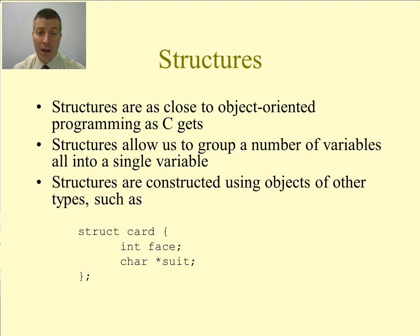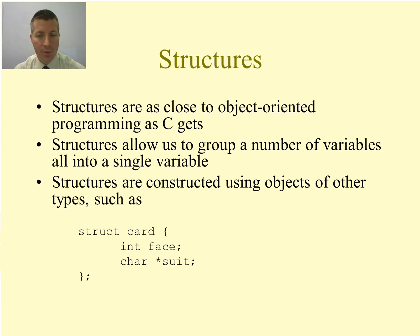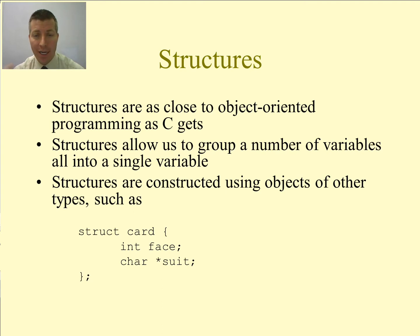We've seen another construct that allows us to do something like this, and those are arrays. An array allows us to have multiple variables all related to each other because they all have the same name. The difference between an array and a structure is that a structure allows us to have variables of different types and of different names that are all grouped together inside of this construct that we call a structure. So you see the third bullet — structures are constructed using objects of other types.